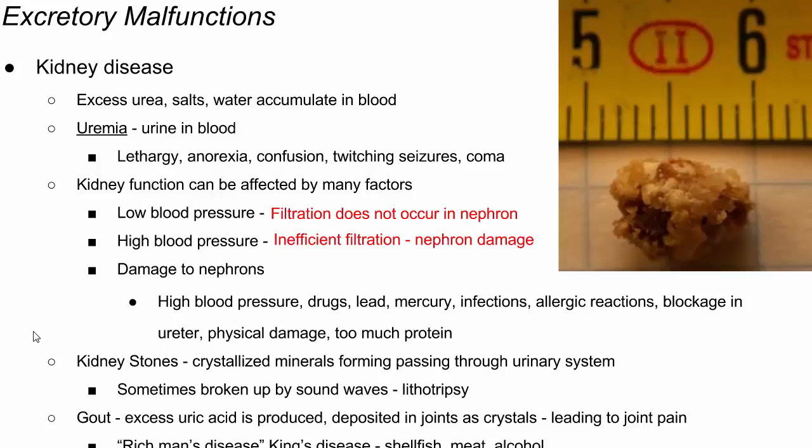Another disorder of the excretory system is gout. Gout is when uric acid — we excrete most of our nitrogen as urea, but some uric acid is produced — is not soluble in water and gets deposited in the joints of the body. It leads to crystals forming and a lot of pain when using and bending joints. People with gout may have difficulty walking. It used to be called 'rich man's disease' or 'king's disease' because it's sometimes dietary dependent — people with gout are told to avoid certain meats, shellfish, and alcohol, foods historically only the wealthy could access.